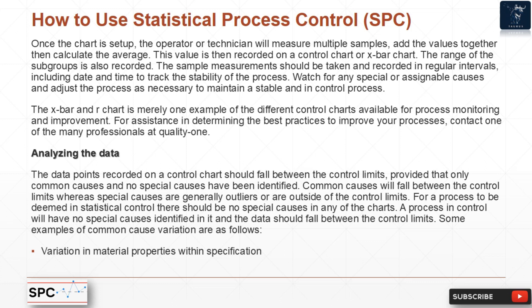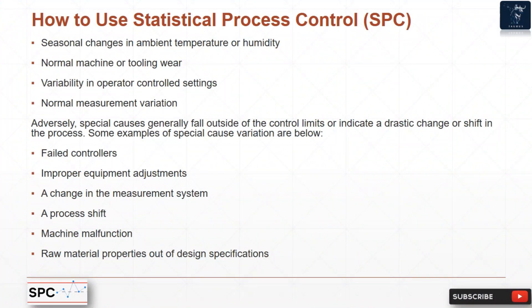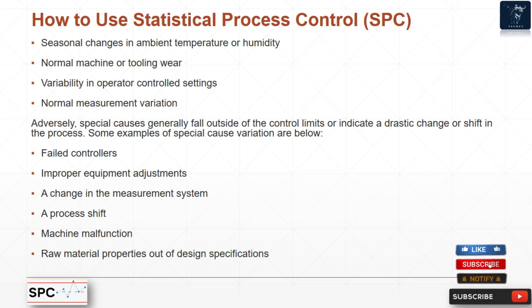Some examples of common cause variation include: variation in material properties within specification, seasonal changes in ambient temperature or humidity, normal machine or tooling wear variability, normal variation in operator-controlled settings, and normal measurement variation.